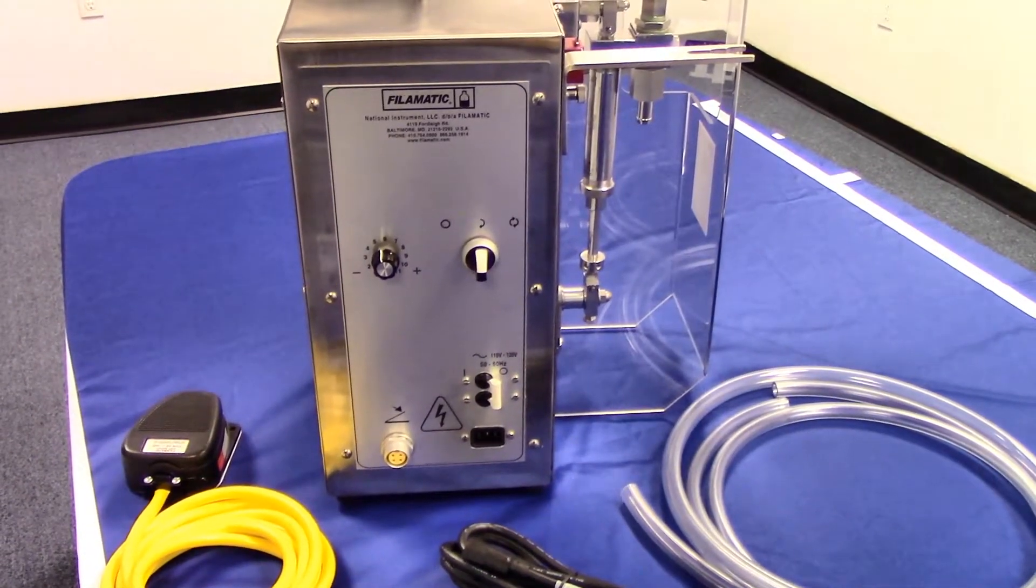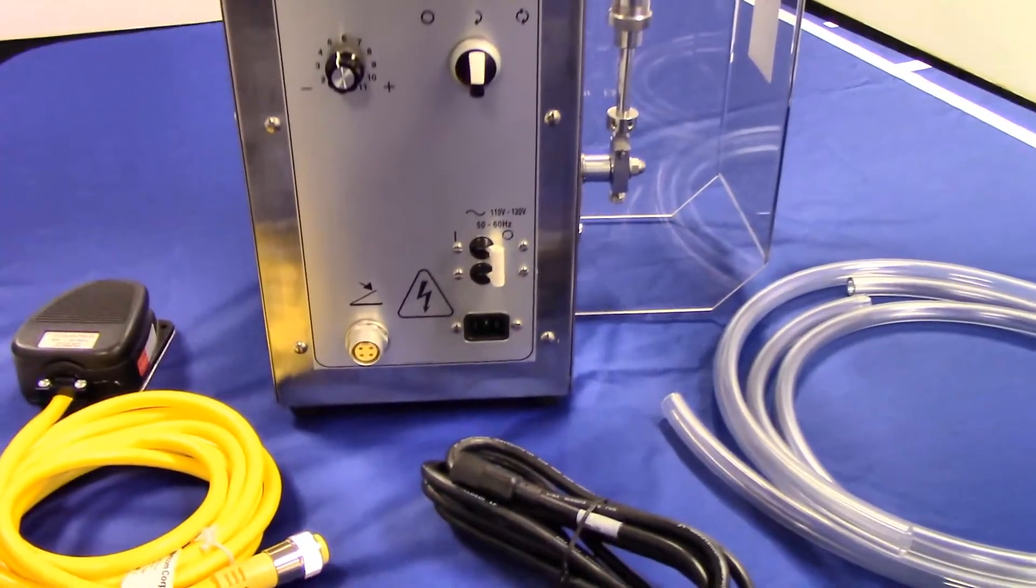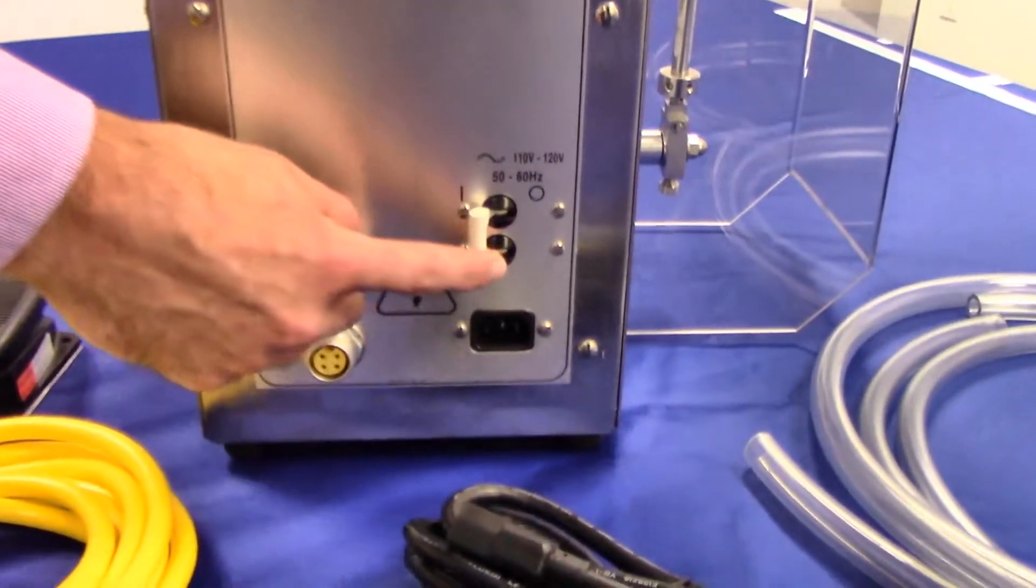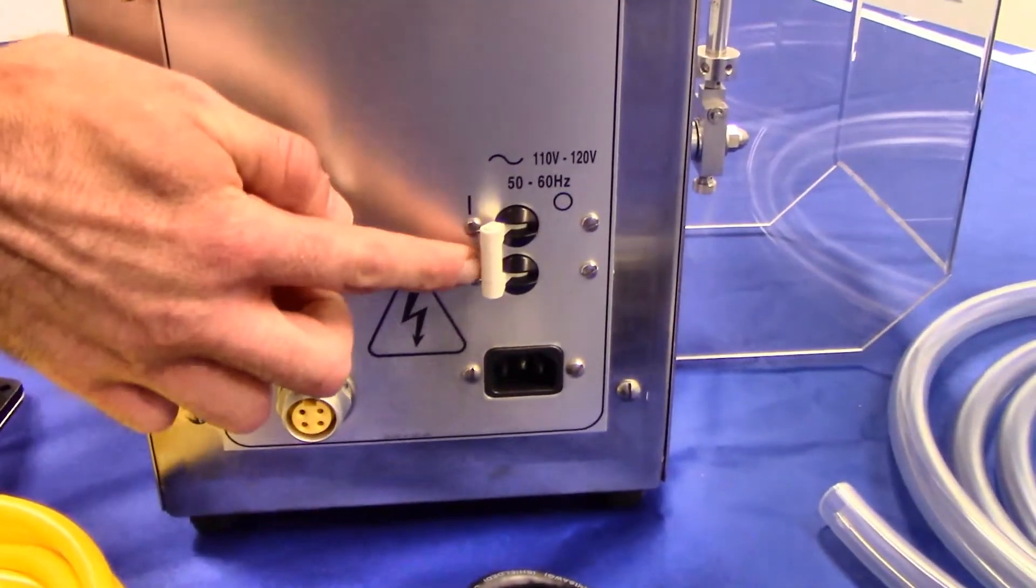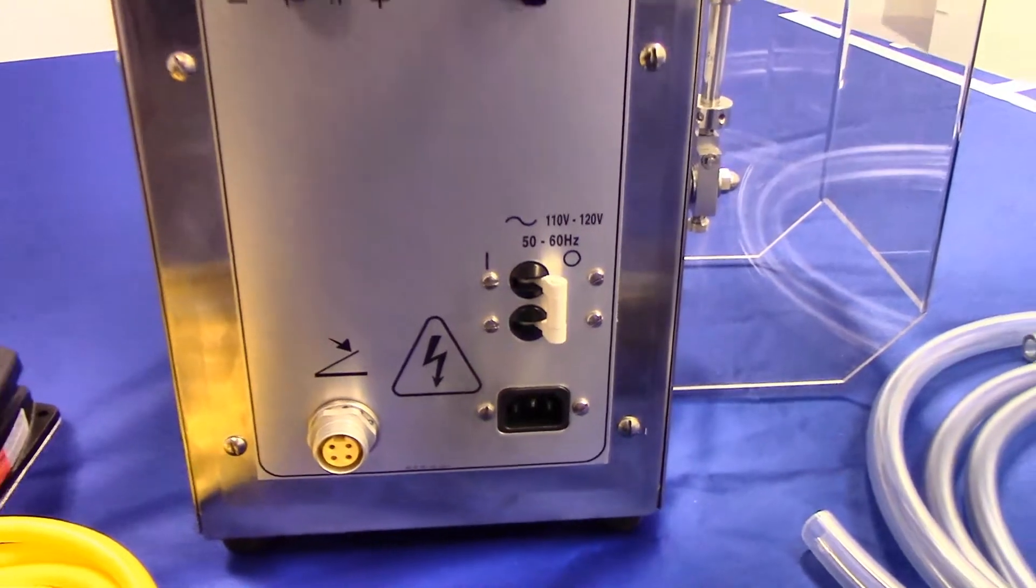Let's start with the circuit breaker, which also functions as your on-off switch. The left position is the on position, and to the right is the off position.